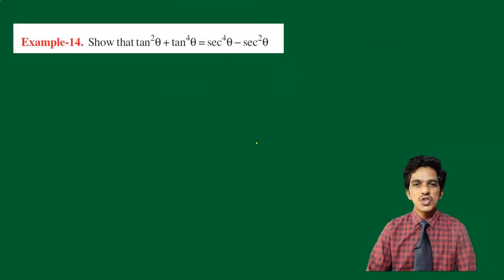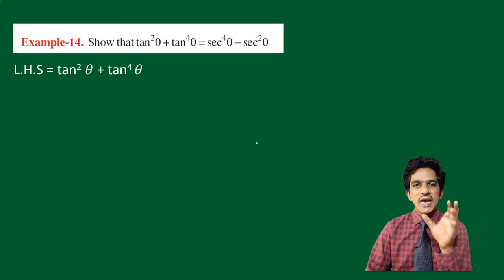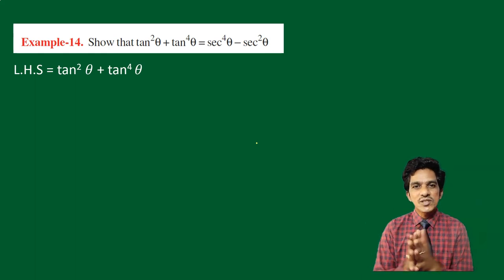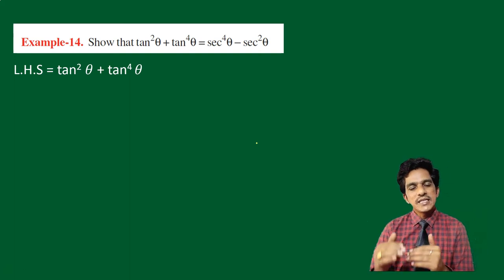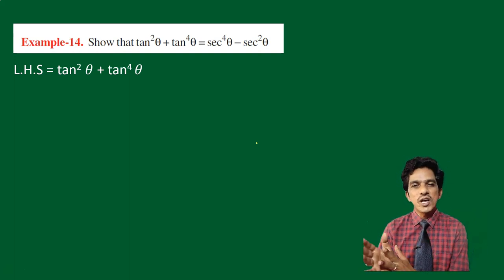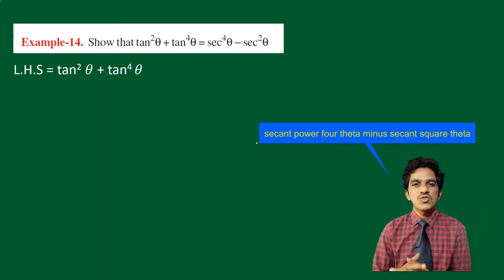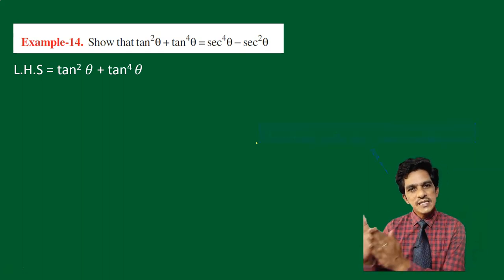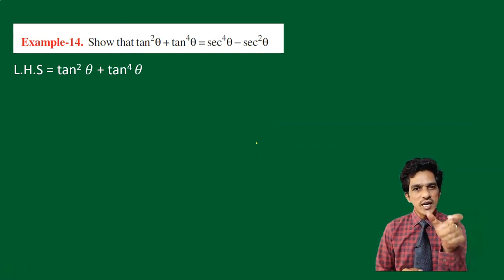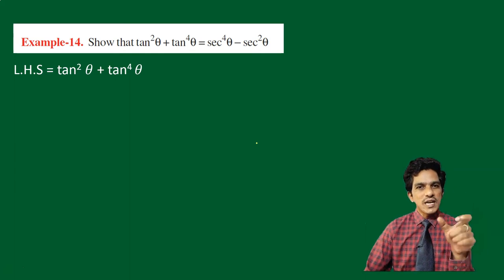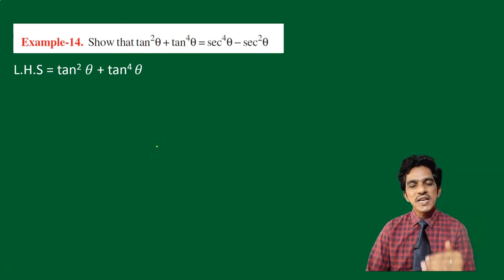Now look at example number 14. Show that tan square theta plus tan power 4 theta is equal to secant power 4 theta minus secant square theta. On the left side, we have an expression which involves tan — there are two terms: tan square theta plus tan power 4 theta. We need to convert this expression involving tan into one involving secant.